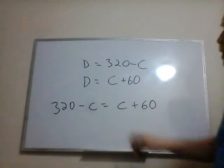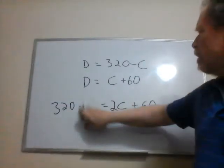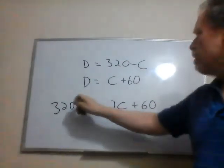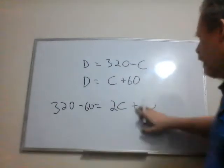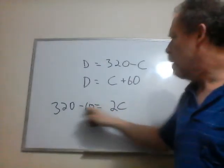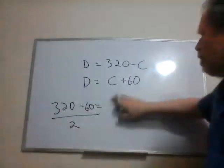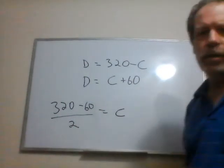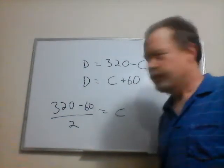What I can do is I can move this negative C over here as a positive C. That's 2C, and I can subtract the 60 over here. And then I can take the two down below. So I now have C all by itself and everything else on the other side, which is where I love to be.